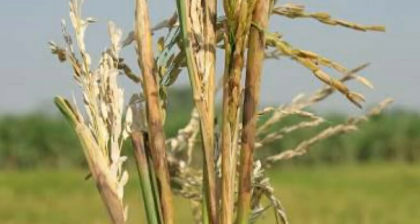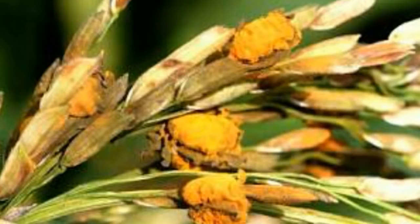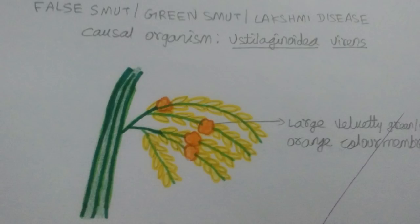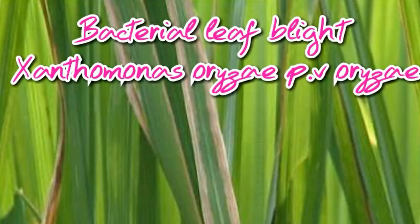The third disease is sheath blight, and there is also sheath rot. In the November season, at harvest time, there is a disease called false smut. In false smut there is a ring-like structure in the flower. This is the fifth disease — bacterial leaf blight.